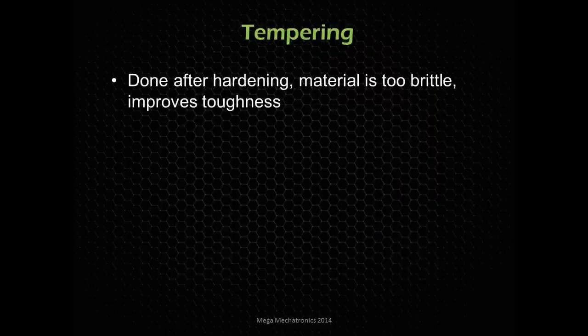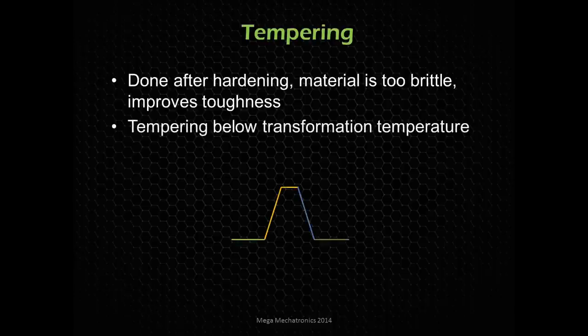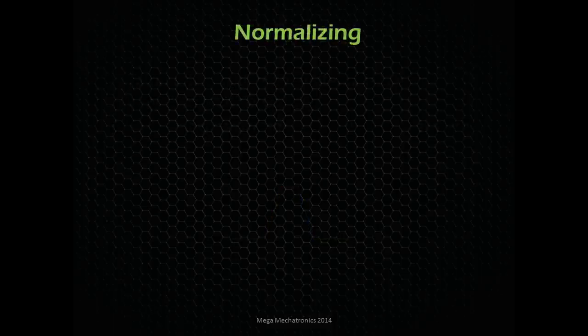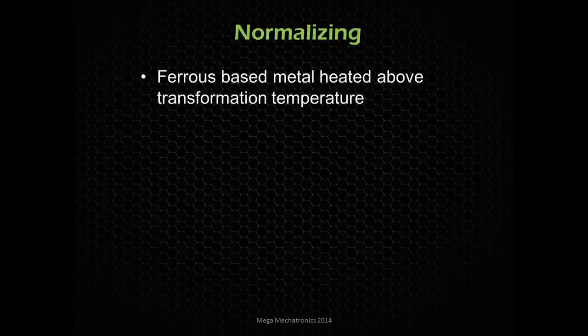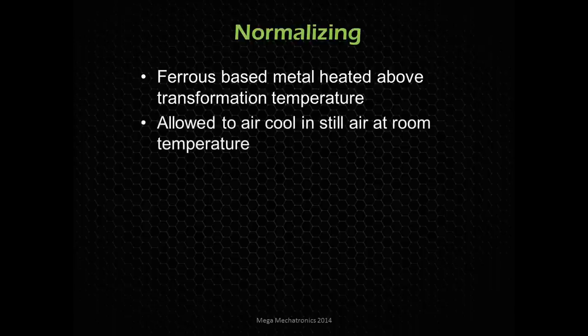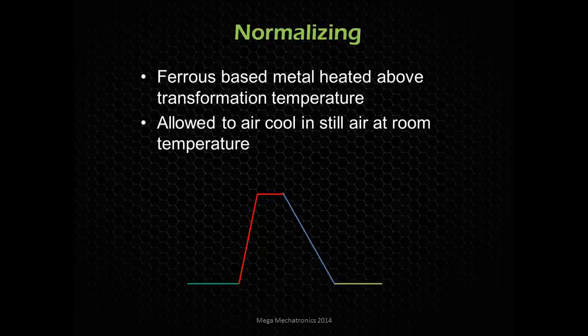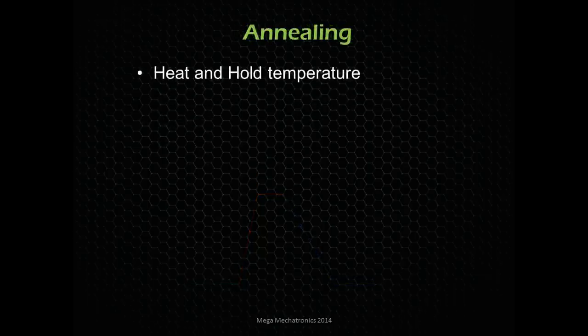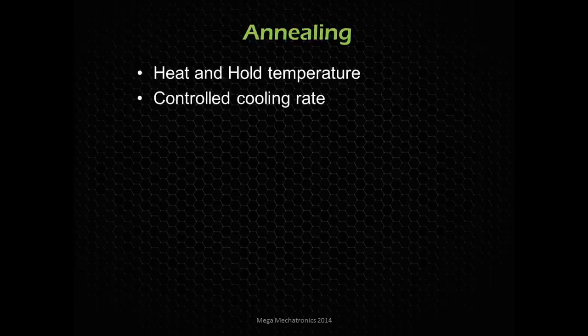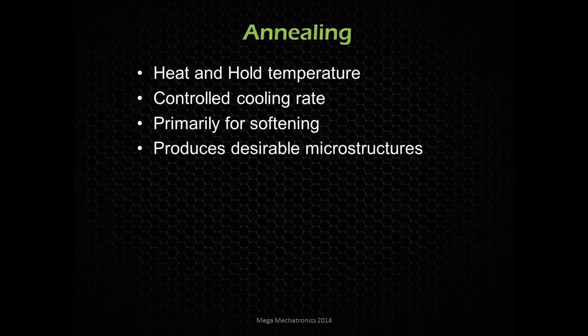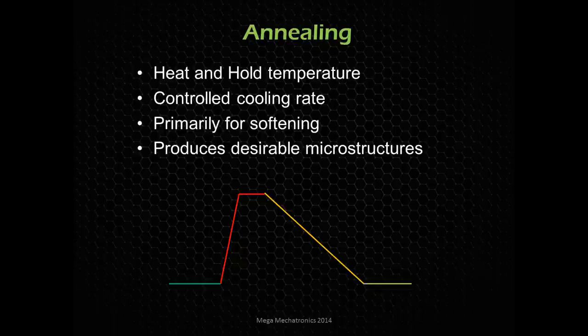Tempering is done after hardening because the material is too brittle, and it's done below the transformation temperature. Normalizing for ferrous-based material means heating it up to transformation temperature to crystallize it, but then air cooling it — heating to hardening temperature without quenching, giving us different crystal structures. Annealing means heating it up, holding at crystallization temperature, but this time controlling the cooling rate by leaving it in an oven and tapering down the temperature. This allows grain structures to build and grow, giving a softer, more ductile material.